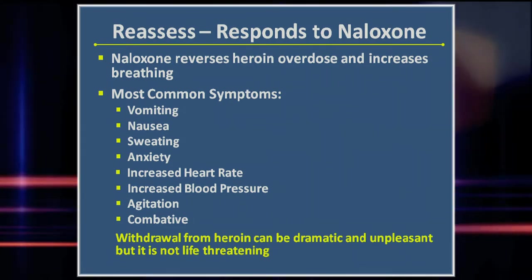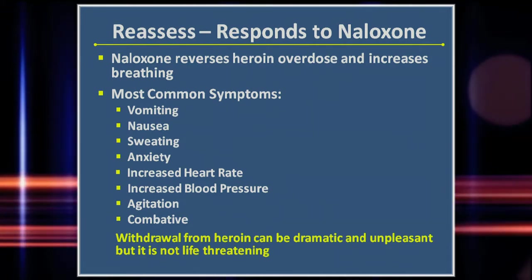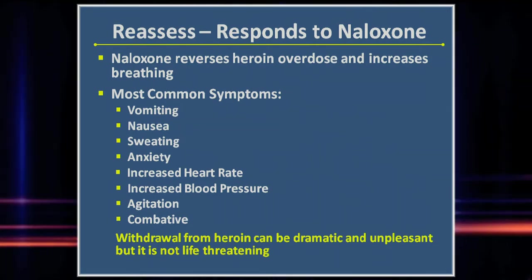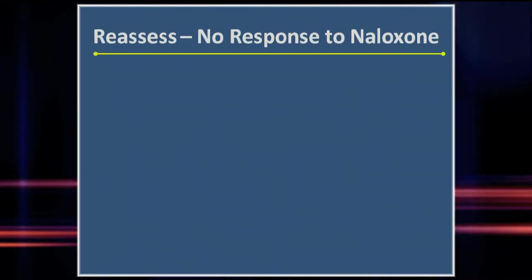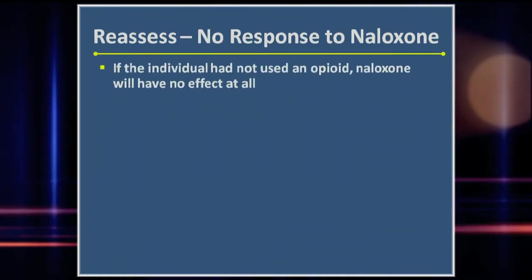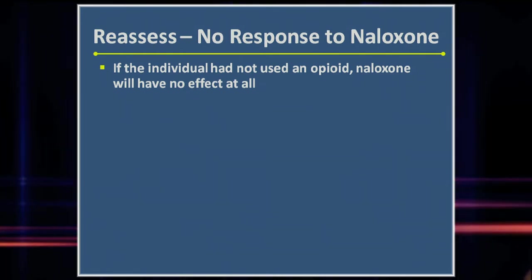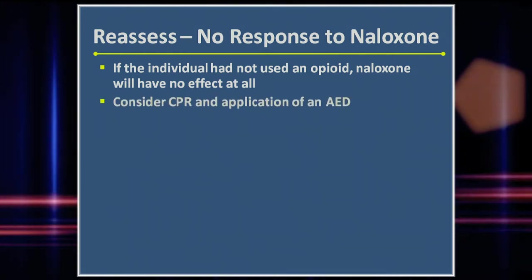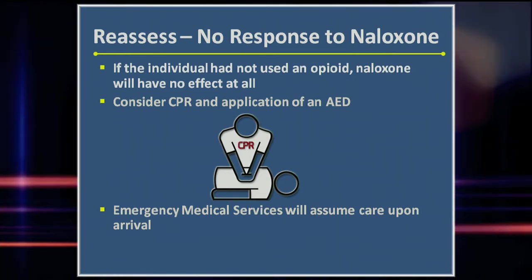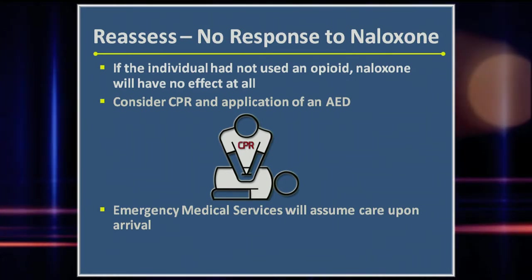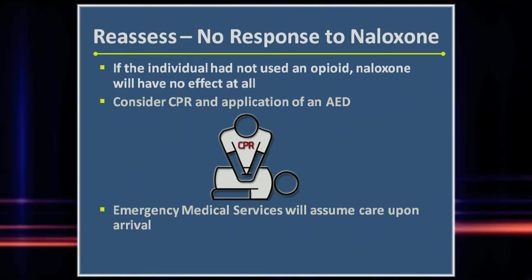Do your best to keep them calm until EMS arrives, but do not allow them to leave. If the patient begins vomiting, make sure they are turned on to their side to avoid aspiration. If the patient was not suffering from an opiate overdose, naloxone will have no effect at all. There are still many potential causes for their unresponsiveness. At this point, you should consider initiating CPR and utilization of an AED. EMS can assume further care upon their arrival.